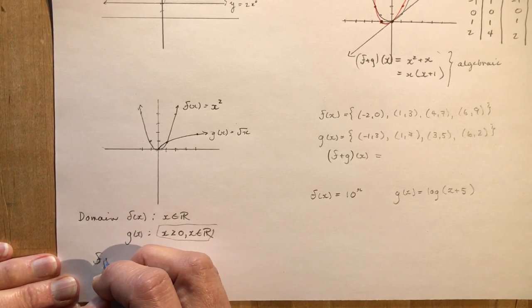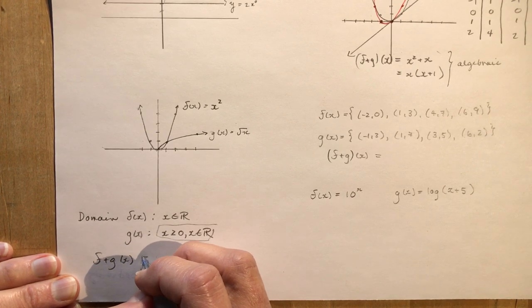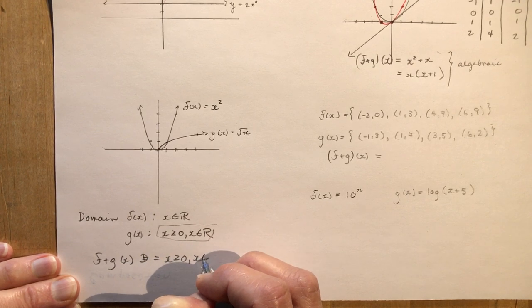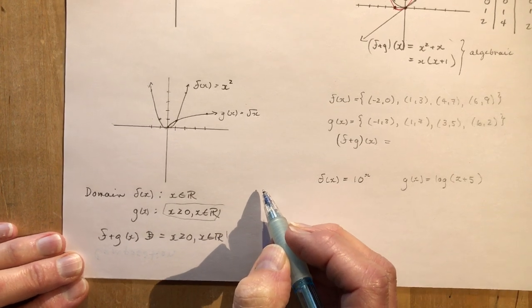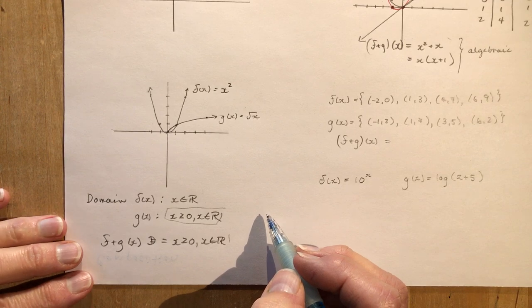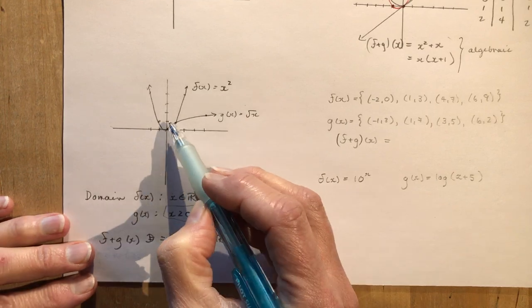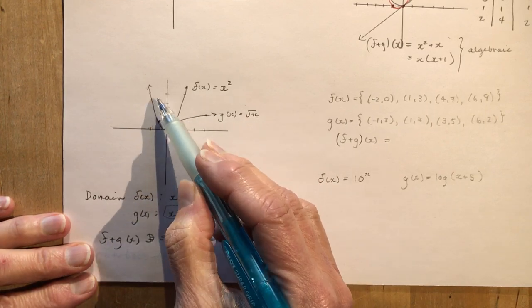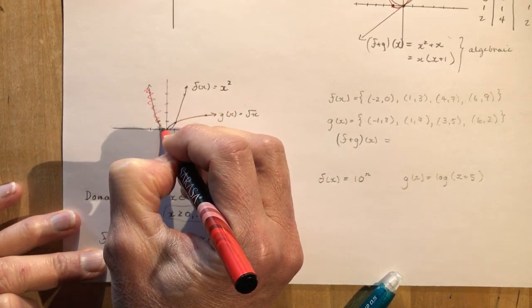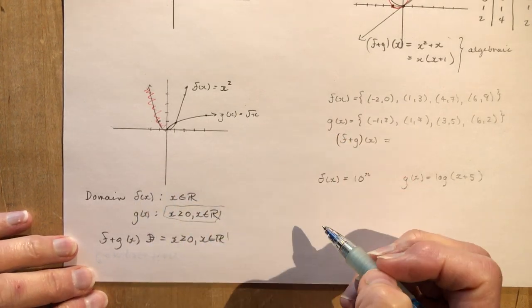So the domain of f plus g at x is the domain equals x is greater than or equal to zero, x is an element of real numbers. Every time you go about adding some functions together, you have to make sure that they are going to have points that are on both of the graphs. It just makes sense. How can I add this together with this when I don't have this? So this part here becomes irrelevant for my combination function of x squared and root x.